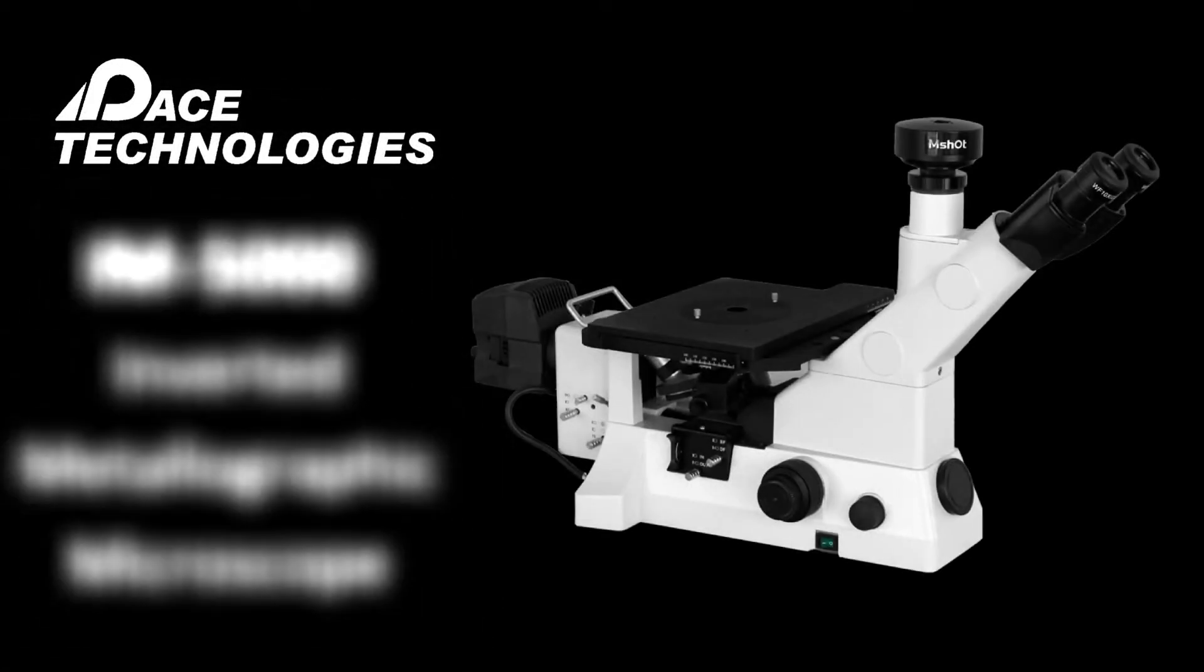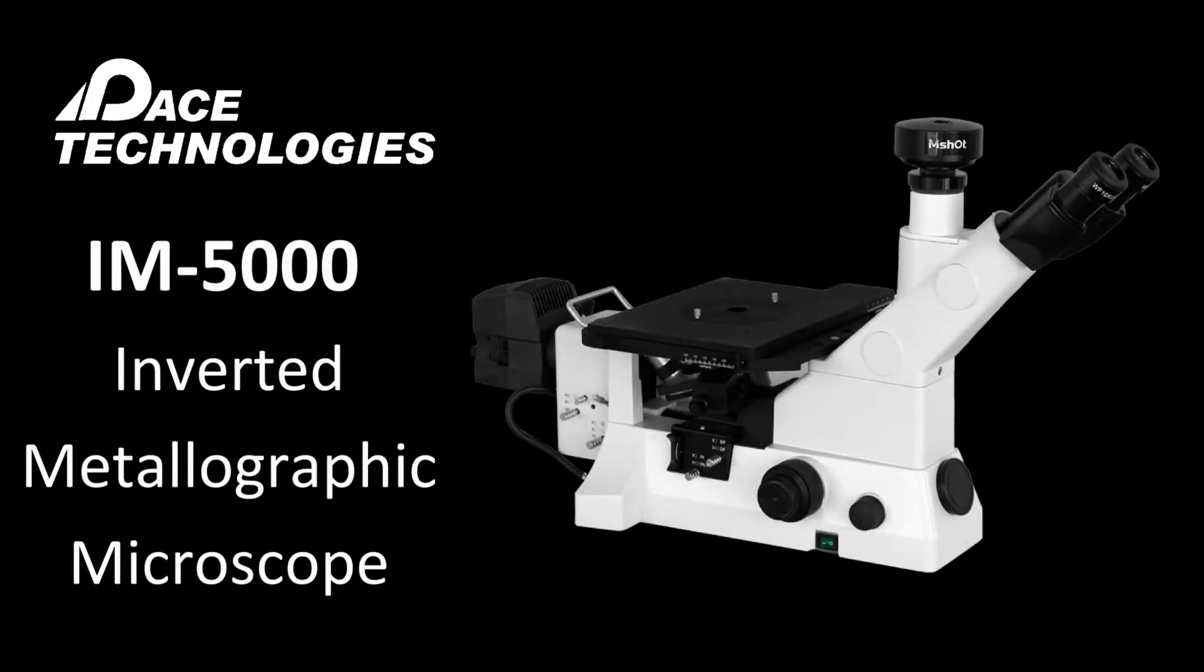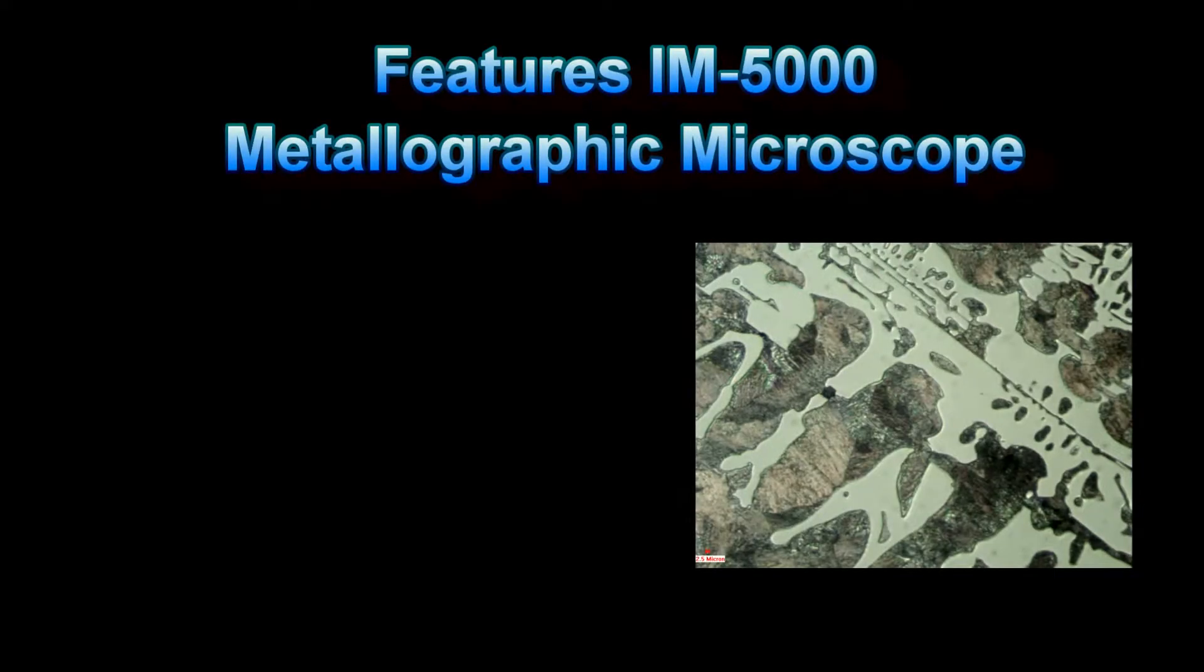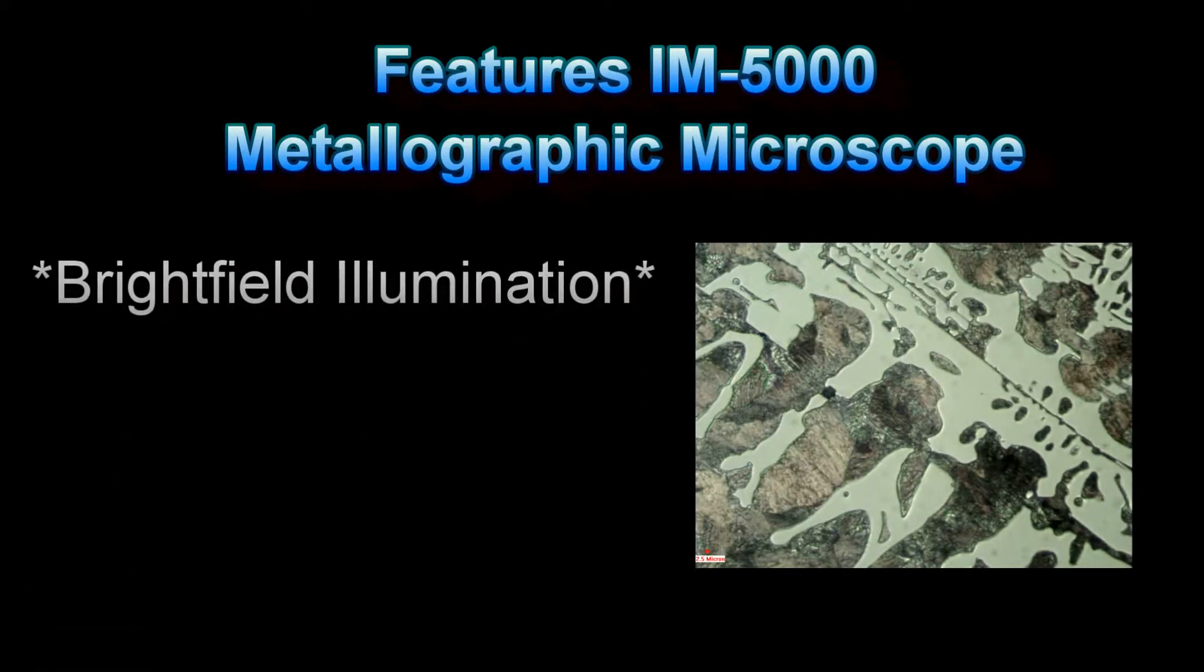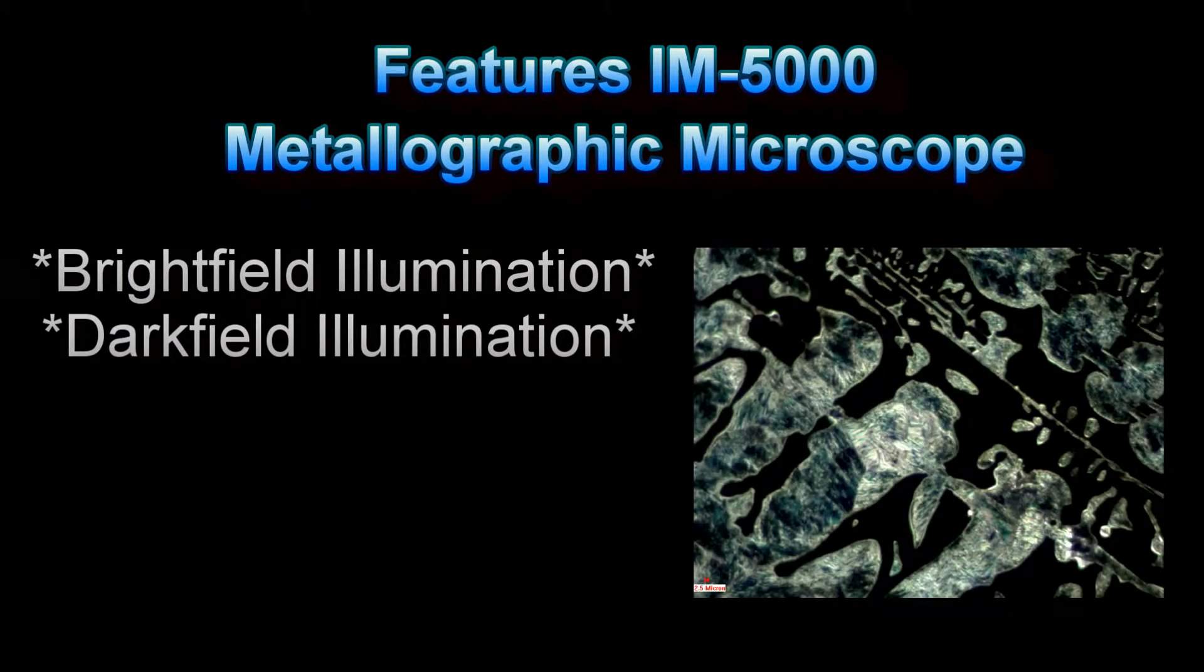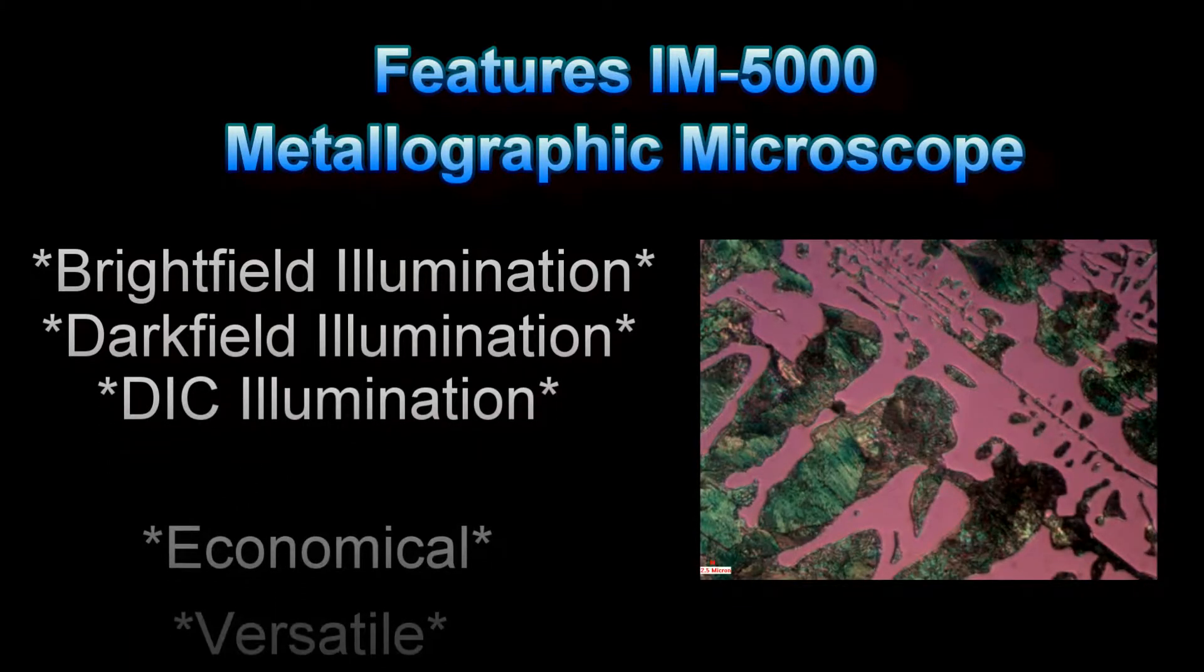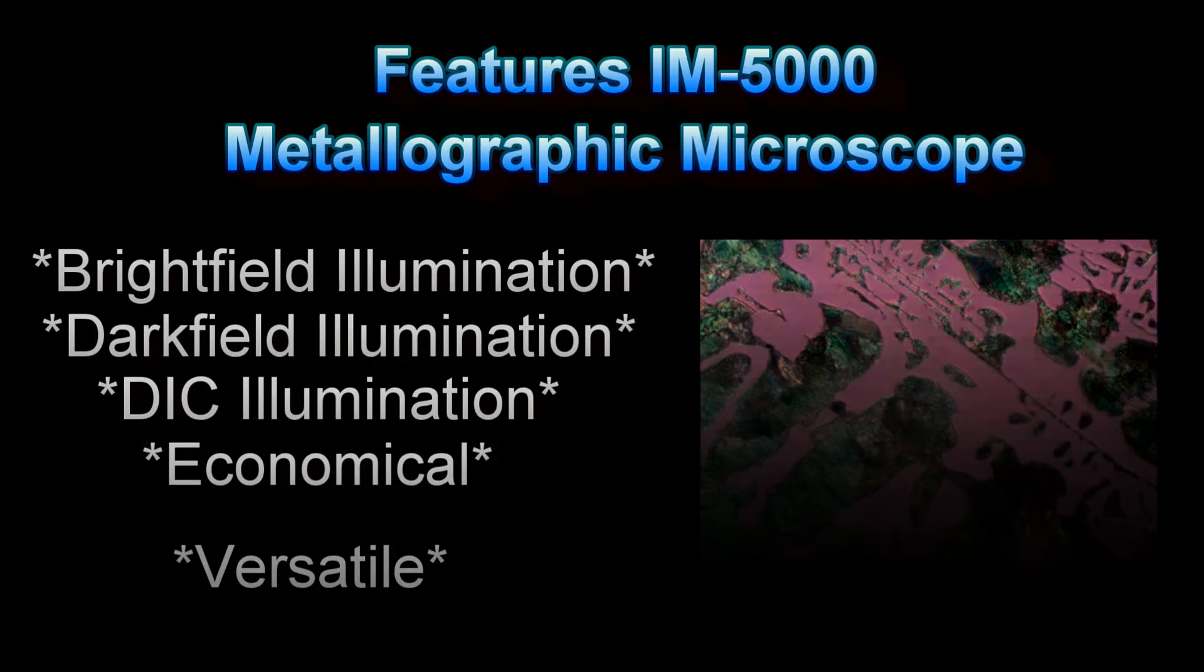The IM5000 is an inverted microscope at a reasonable price. It is an excellent microscope for universities and low-volume labs requiring advanced illumination techniques. It is ideal for metals as well as advanced materials such as ceramics and composites. The features of the IM5000 include bright field illumination, dark field illumination, and differential interference contrast illumination, all at an economical cost, which makes it a very versatile instrument.